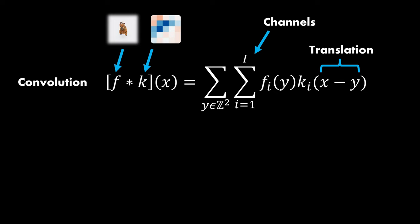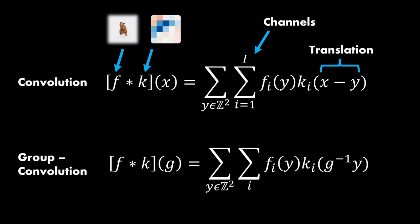Group convolutions now simply replace the shift with a more general transformation from some group G. As a result, each pixel is moved to some new position, which is determined by multiplying with a group transformation. For instance, if G is some rotation matrix, which is multiplied with each position y in the pixel space. You might wonder why it's called g to the power of minus 1.